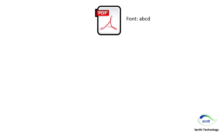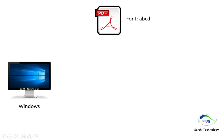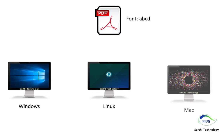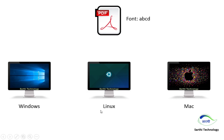For example, you have a PDF and in that PDF a font named ABCD is used. You are opening this PDF in a Windows system and this ABCD font is installed in that Windows system, so the text will show in the ABCD font. But if you are opening the same PDF on Linux or Mac and this ABCD font is not installed in that system, then the font will be replaced with another font, so the same PDF will not look the same on different platforms.